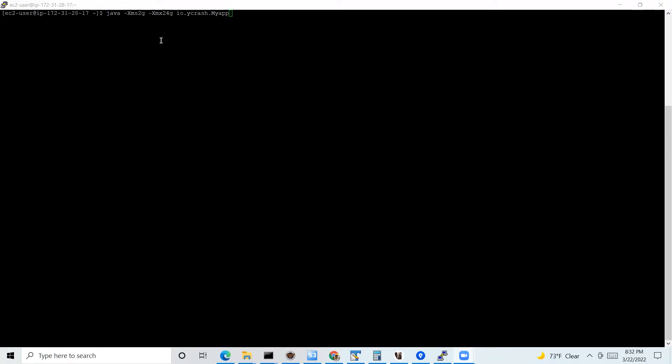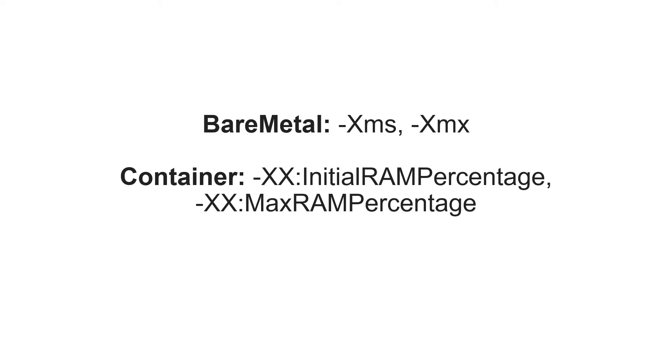When I set XMS to 2 GB, that means when I launch my Java application, it's going to launch with a 2 GB heap size. As requests come in and the demand for memory builds up, my application can scale up to 24 GB. In a container environment, you can use the initial RAM percentage or max RAM percentage arguments, but fundamentally they are also used to set the initial heap size and the maximum heap size.